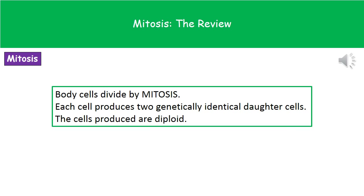These cells are what's called diploid, which means that they have two of each chromosome — just like all of your other normal body cells. When they've replicated by mitosis, the products are genetically identical to the parent cell.